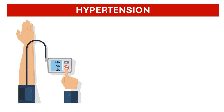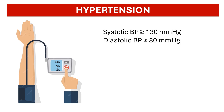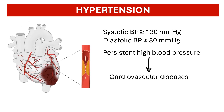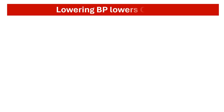Hypertension is defined as a systolic blood pressure greater than or equal to 130 mmHg, or a diastolic blood pressure greater than or equal to 80 mmHg, measured on two separate occasions. Hypertension is considered one of the leading causes of cardiovascular diseases. Lowering blood pressure does reduce cardiovascular risks.